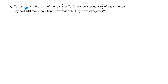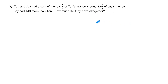Question 3: Ton and Jay had a sum of money. Three-quarters of Ton's money is equal to two-fifths of Jay's money. Jay had $49 more than Ton. How much did they have altogether? There are two ways to solve this — you could draw the model out where three units of Ton equals two units of Jay — or there's a shortcut trick I'll teach you.